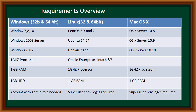It doesn't matter if you're on a 32-bit or 64-bit Windows operating system. If you've got Windows 7, 8, or 10 — or Windows 2008 Server or Windows 2012 Server — your machine should be ready. You need a minimum of one gigahertz processor speed, at least one gigabyte of RAM, and at least one gigabyte of hard disk space.